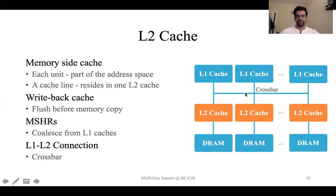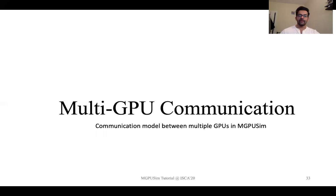The L2 cache is also a write-back cache. One important thing to handle in our simulator is that in case of a memory copy — for example, from the GPU back to the CPU, or from one GPU to another — the data has to be flushed, because the L2 cache can contain dirty data that is not yet updated in DRAM. Similar to the L1 caches, the L2 cache also has miss status holding registers (MSHRs) to support hits under misses, coalescing requests from the different L1 caches. The L1-to-L2 interconnect is through a crossbar, which is the most commonly used design in GPUs and is therefore the one modeled in our simulator.